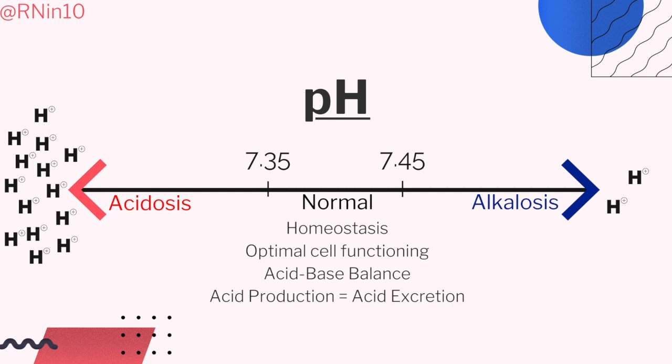It is important to note the inverse relationship between the number of hydrogen ions and the pH. The higher the concentration, the lower the pH number. A higher pH number — greater than 7.45 — means fewer hydrogen ions.